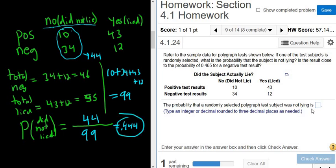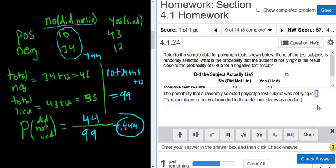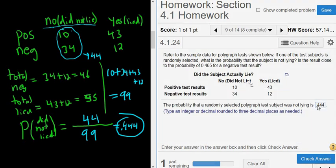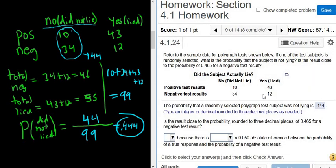All right, so let's try it. 0.444. Yes, all right. Is the result close to 0.465? It's only close if it's within 5%. So in this case, 0.465, it's really, really close, right?